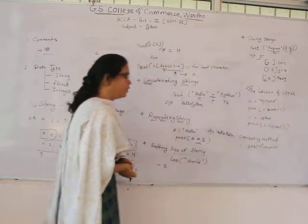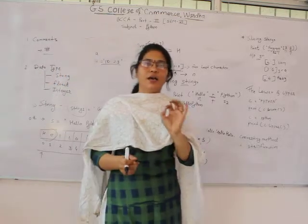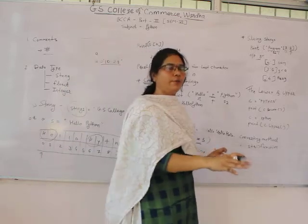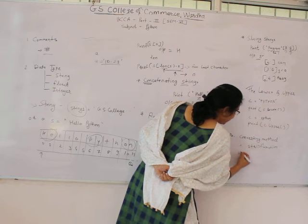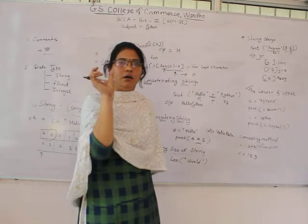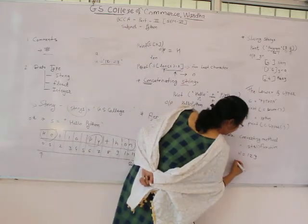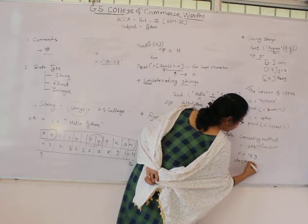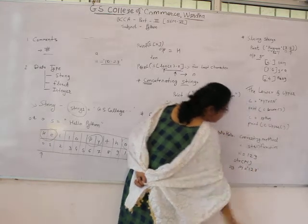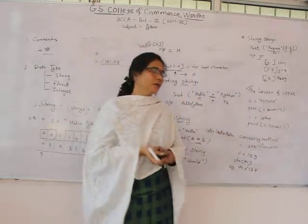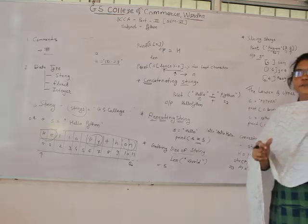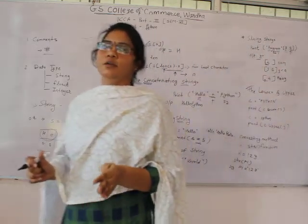The last operation is the str() function, which is used for converting a numeric format into string format. For example, if pi = 123, then pi is an integer value. If we write str(pi), it converts the value 123 into a string — that means it is enclosed in single or double quotation marks. So str() is a function used to convert a numeric value into string format.